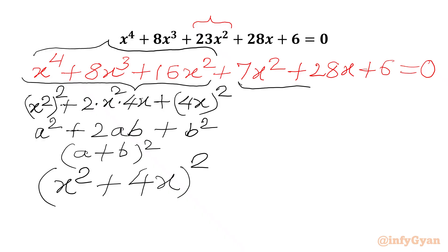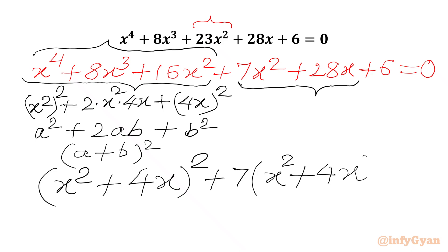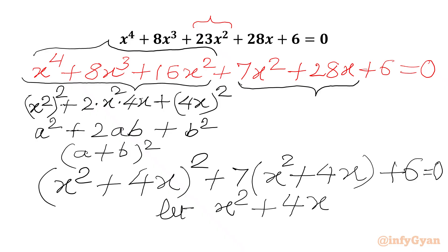Now we have 7x squared plus 28x, where we take 7 common to get 7 times (x squared plus 4x), then plus 6 equal to 0. This is one quadratic equation in x squared plus 4x, so let us assume x squared plus 4x equal to y, so our equation becomes quadratic in y.